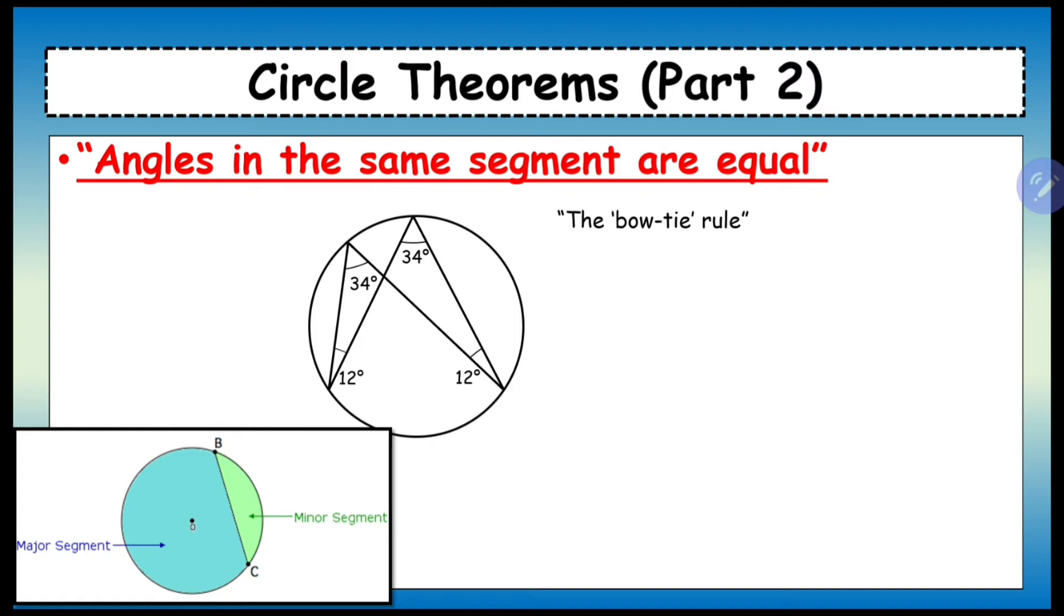Now how do we establish where the segment is to start off with? Well, there's the line because when you look back at where the angle was drawn from, you realize it was drawn in this way. And then this angle was also drawn from the same points. So we draw a line across that and look at the diagram at the bottom.